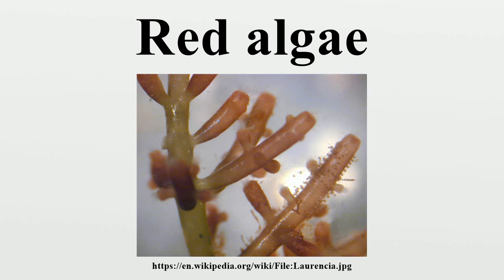Upon collision, the walls of the spermatium and carpogonium dissolve. The male nucleus divides and moves into the carpogonium. One half of the nucleus merges with the carpogonium's nucleus. The polyamine spermine is produced, which triggers carpospore production. Spermatia may have long, delicate appendages, which increase their chances of hooking up.